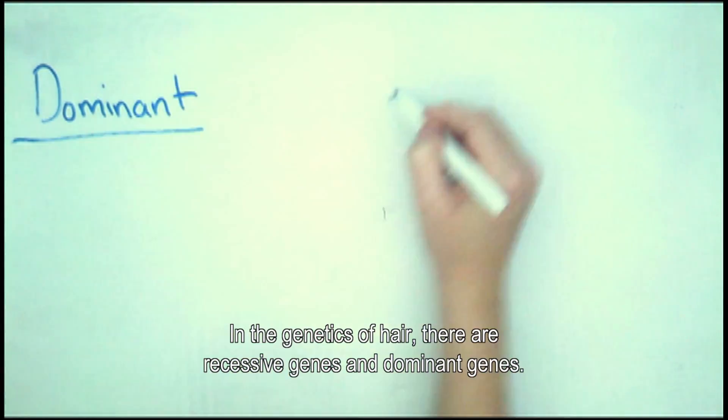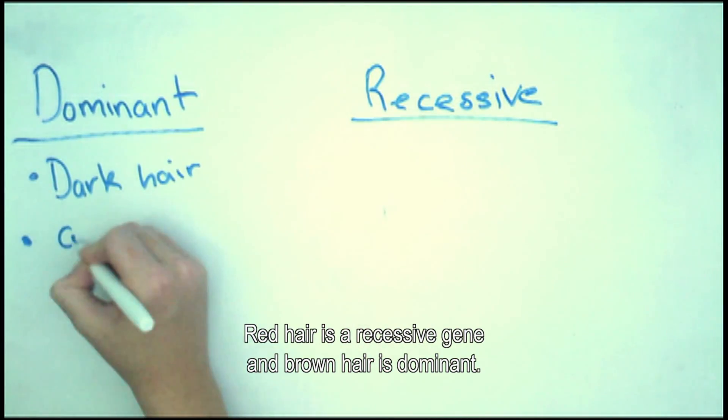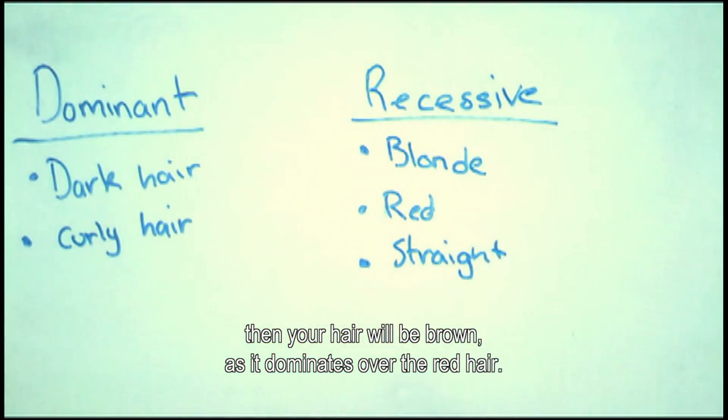In the genetics of hair, there are recessive genes and dominant genes. Red hair is a recessive gene and brown hair is dominant. If you had a red hair gene and a brown hair gene, then your hair would be brown as it dominates over the red hair.